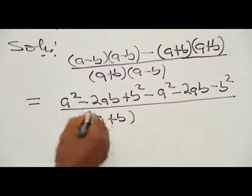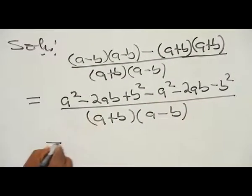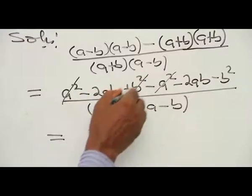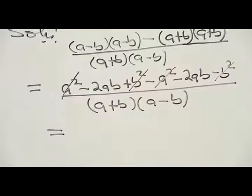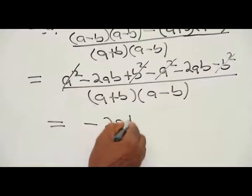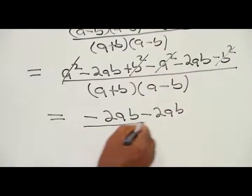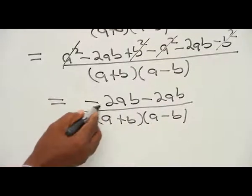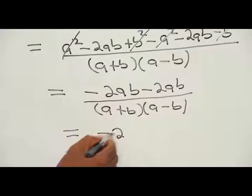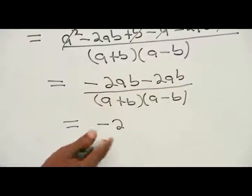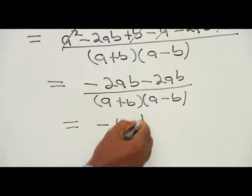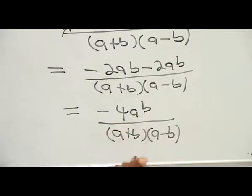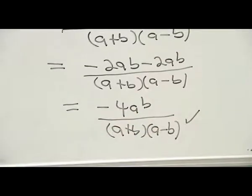The denominator remains (A plus B)(A minus B). In the numerator, minus 2 and A and B are all common, giving minus 4AB. The final result is minus 4AB divided by (A plus B)(A minus B), and we cannot simplify further. This is the simplification of the given algebraic function.